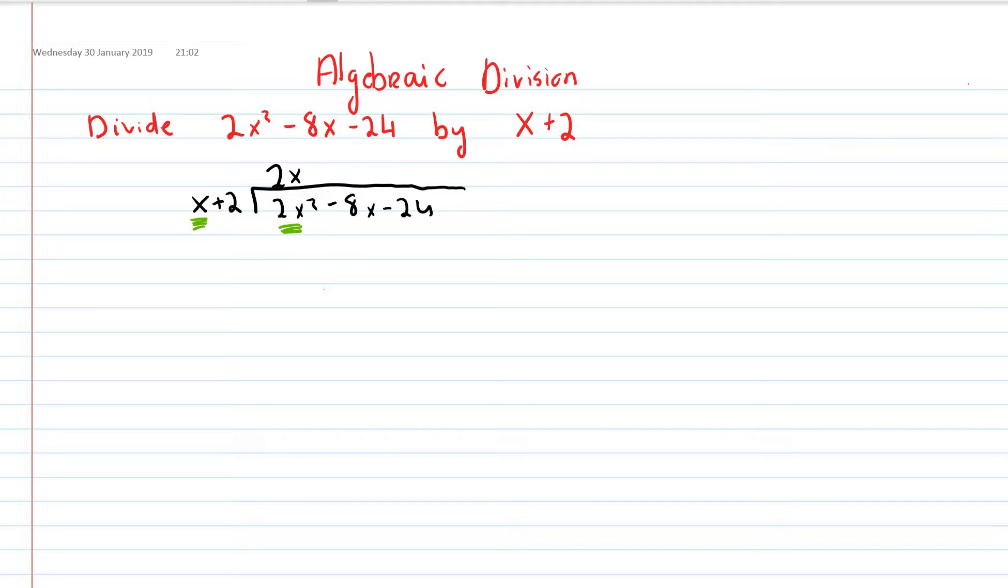And then we're going to do that. So x by 2x is 2x squared.